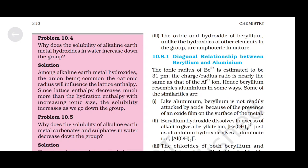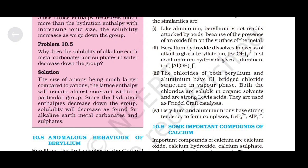Problem 10.4: Why does the solubility of alkaline earth metal hydroxides in water increase down the group? Answer: the anion being common, the cationic radius influences lattice enthalpy. Since lattice enthalpy decreases much more than hydration enthalpy with increasing ionic size, solubility increases as we go down the group. Problem 10.5: Why does the solubility of alkaline earth metal carbonates and sulphates in water decrease down the group? Answer: the size of the anion being much larger compared to cation, lattice enthalpy remains almost constant within the group. Since hydration enthalpy decreases down the group, solubility decreases.